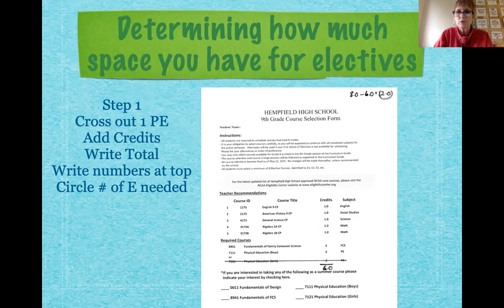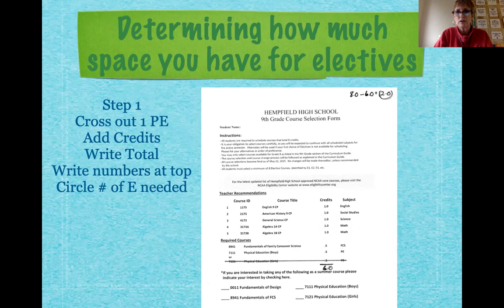You have the opportunity every year to take eight credits total. The student is taking six, therefore the student has two spaces in their schedule — two credits worth of space to pick electives. I want you to look at your worksheet, add up the number of courses you're required to take in ninth grade, subtract it from eight, and put that number up in the upper left hand corner.